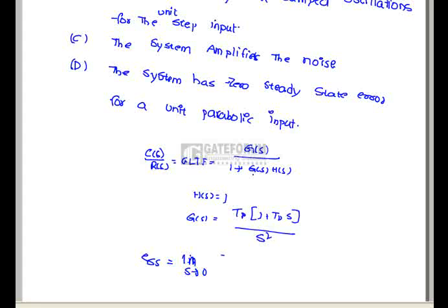limit s tends to 0, s into R(s) by (1 plus G(s) into H(s)). If we substitute the corresponding values where R(s) is the parabolic input, H(s) equals 1, G(s) is mentioned in the above equation, then we will get this equation outcome as a finite value.